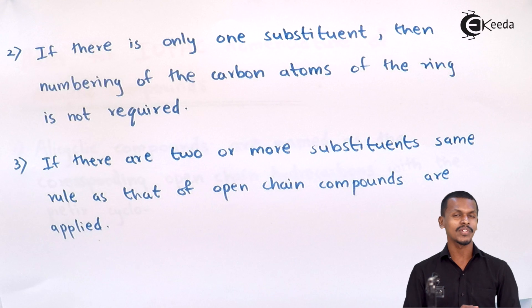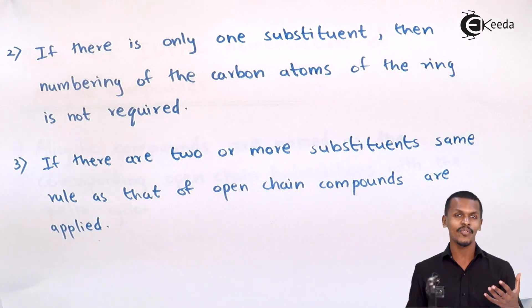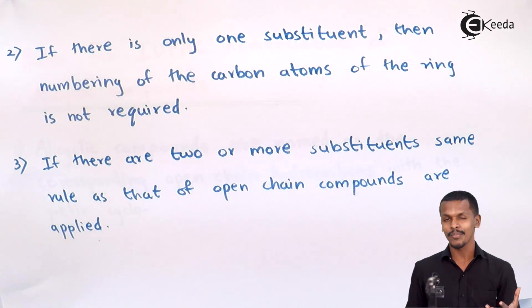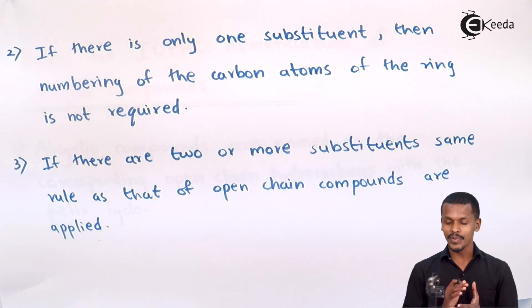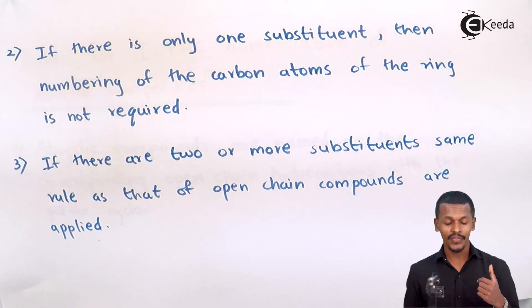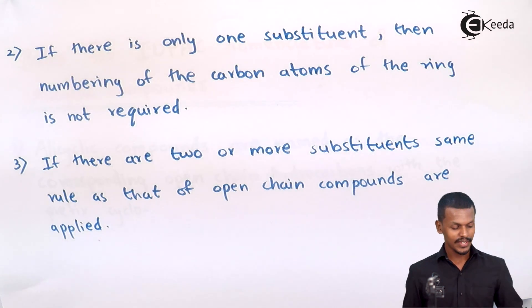Alicyclic organic compounds are not the same as aromatic organic compounds — that is the key difference between them. We will now discuss this with the help of a few examples.